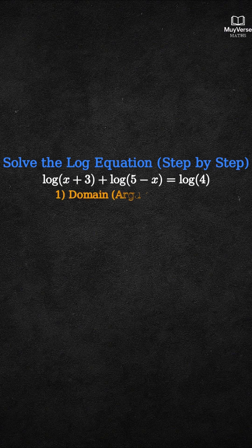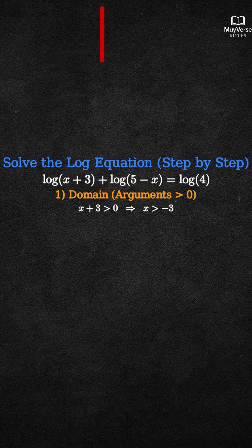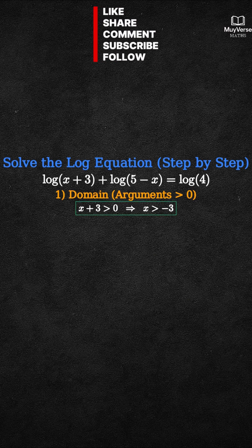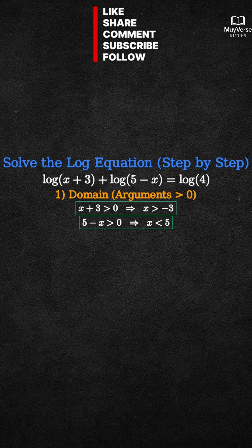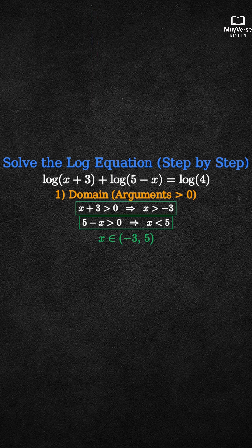Step 1: Determine the domain. For any logarithm, its argument must be positive. From log of (x plus 3), we need x plus 3 greater than 0, so x greater than negative 3. From log of (5 minus x), we need 5 minus x greater than 0, which means x less than 5. Therefore, the solution must lie in the open interval negative 3 to 5.